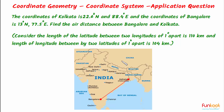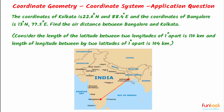Let's do a problem. In this problem, coordinates of Kolkata are given as 22.6 degrees north and 88.4 degrees east, and coordinates of Bangalore are given as 13 degrees north and 77.5 degrees east. We have to find the air distance between Bangalore and Kolkata, that means the straight line distance between Bangalore and Kolkata.